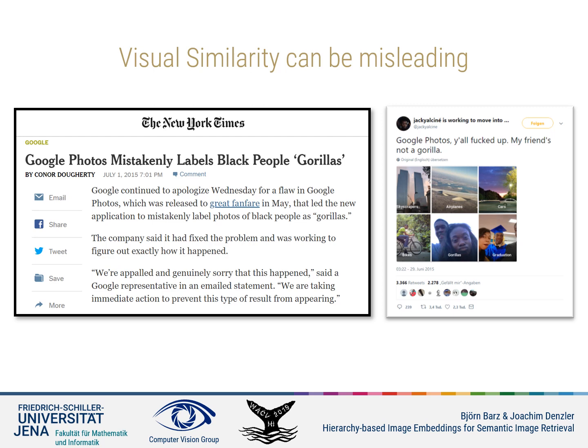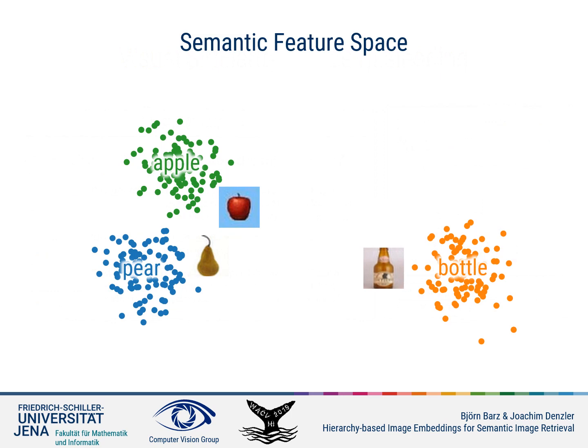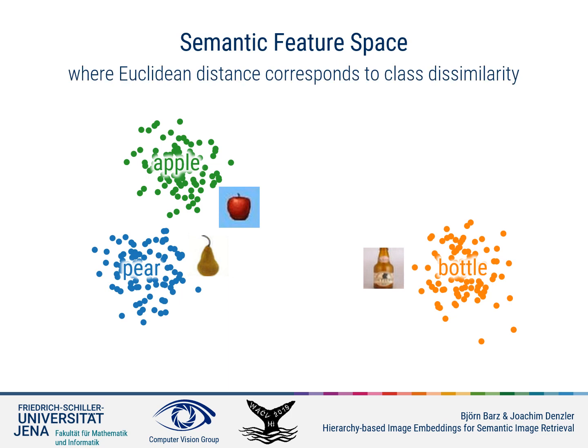A better solution might have been to incorporate semantic information into the learning process to separate humans from gorillas in a semantic feature space. In a semantic feature space, the Euclidean distance directly corresponds to the semantic dissimilarity of the classes. An apple and a pear might not look particularly similar, neither with respect to their shape nor their color, but both are fruits and they should hence be close together in this semantic space. A pear and a bottle, on the other hand, can sometimes look similar, but since they are not semantically related at all, they should be far apart.